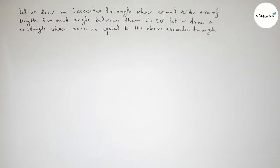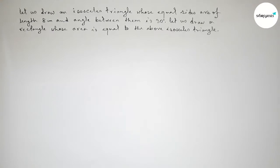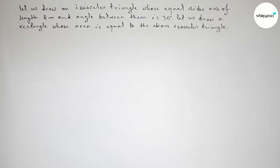Hi everyone, welcome to Essay Share Classes. Today in this video we have to first construct an isosceles triangle with equal sides of 8 centimeters and angle between them is 30 degrees. Then we have to construct a rectangle whose area is equal to the area of the triangle. So let's start the video.